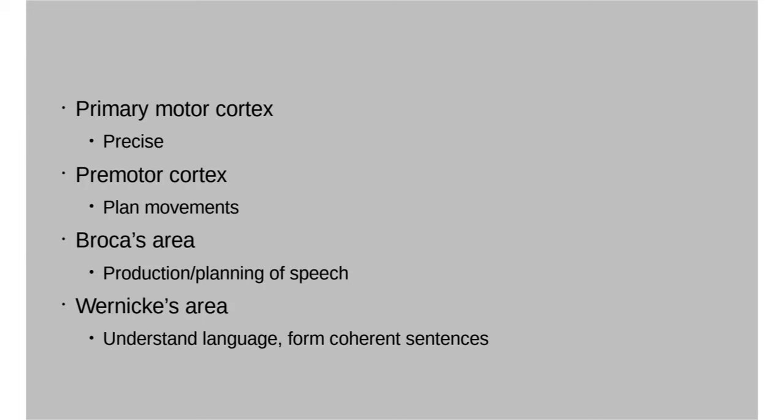Interestingly, the brain can often recover from stroke damage through something called plasticity. Even though the damaged neurons don't regenerate, a different part of the brain can pick up the same job given enough time. So if Broca's area is wiped out and the patient can't speak, there's still a pretty good chance that another part of the brain will take over what Broca's area normally does.